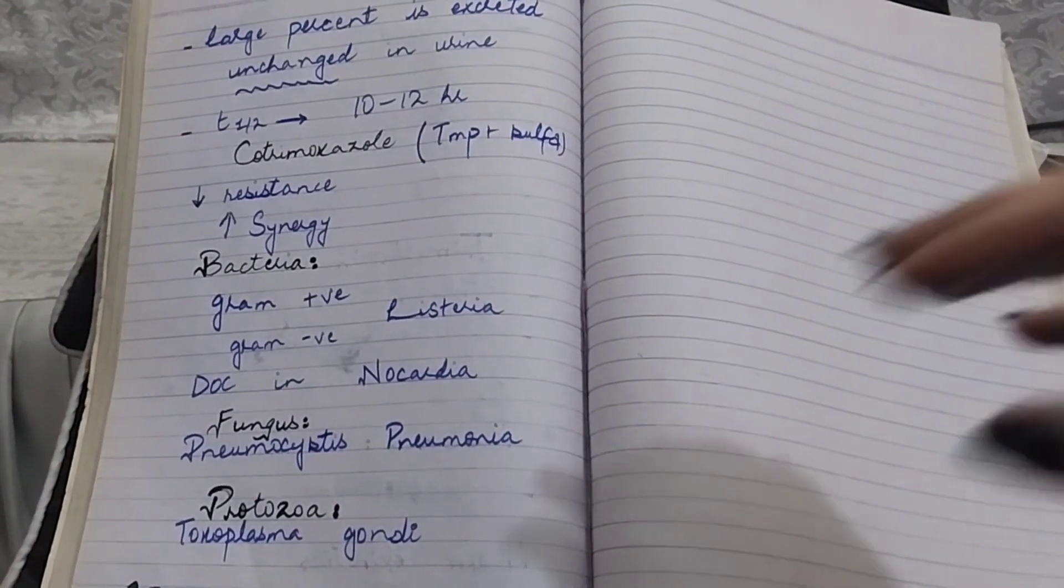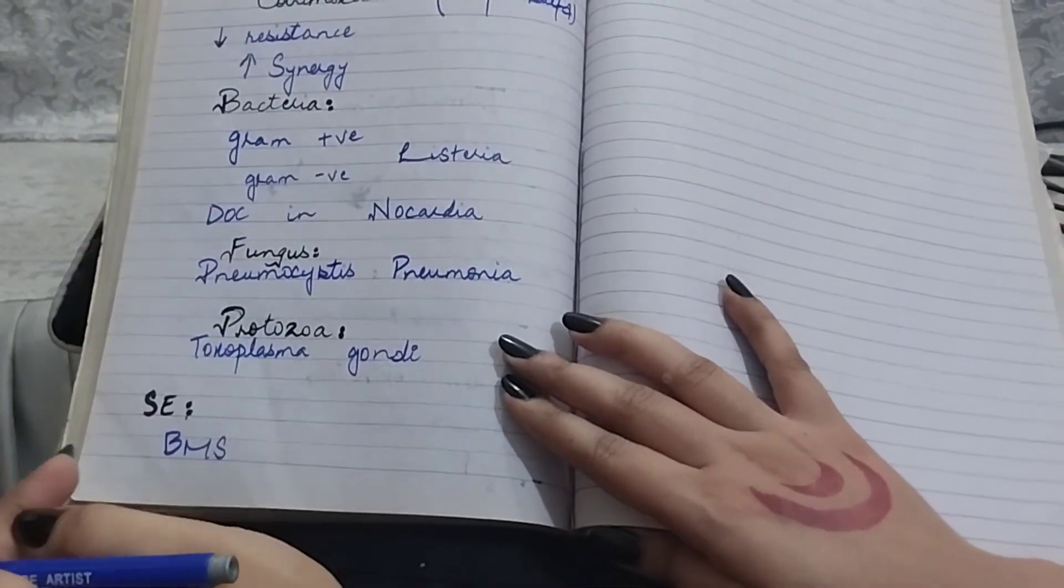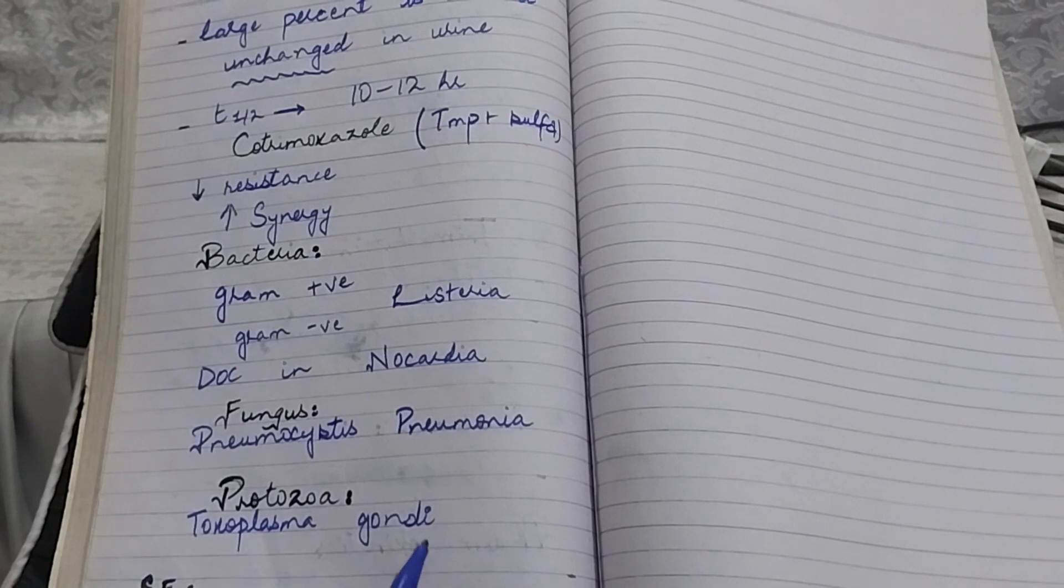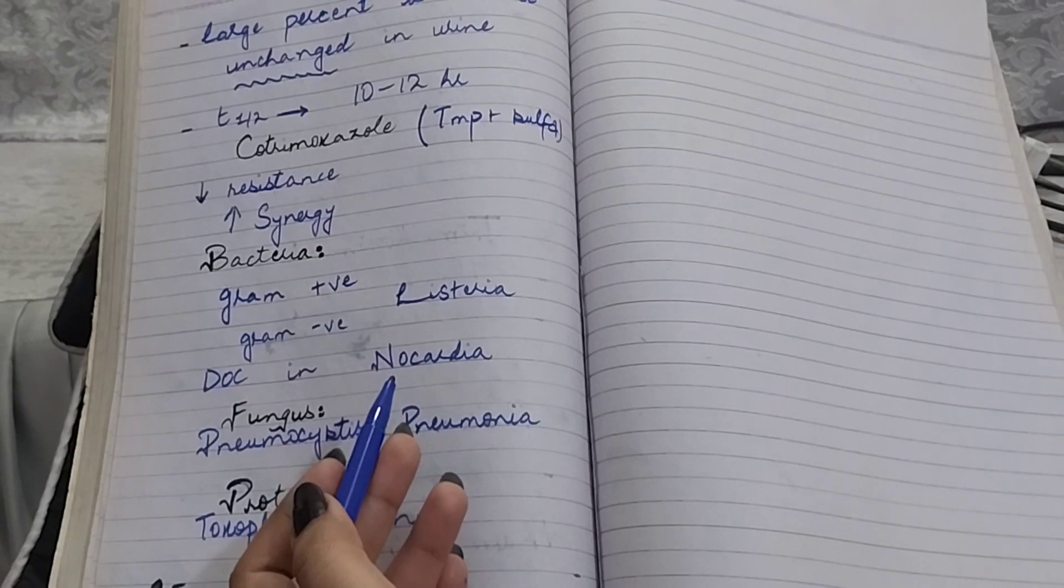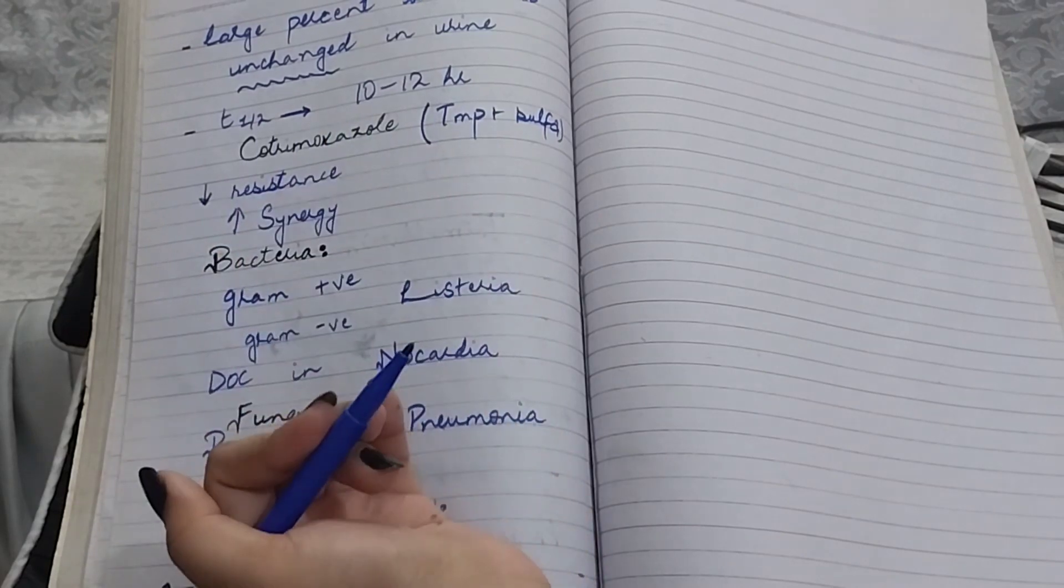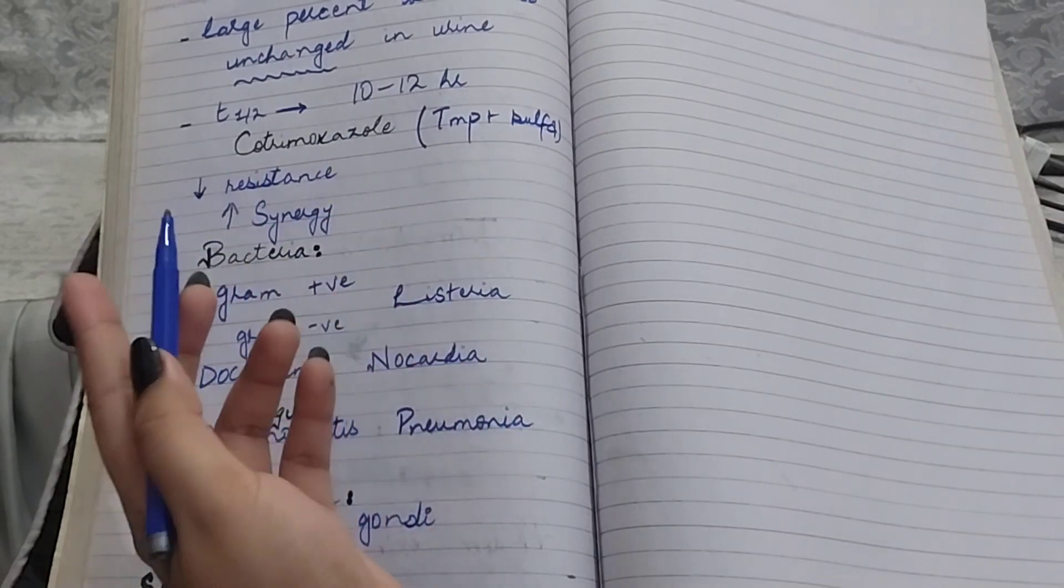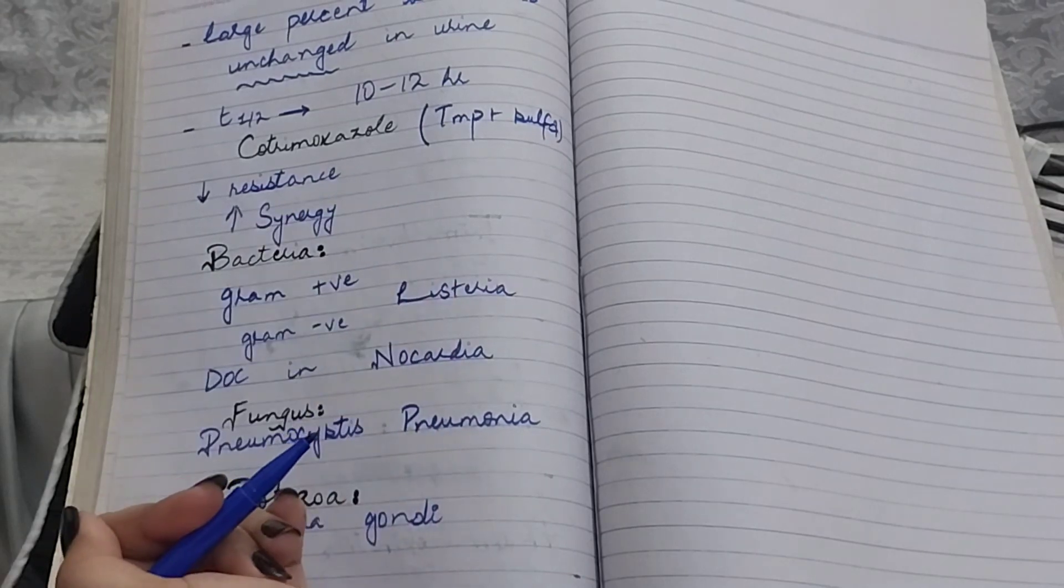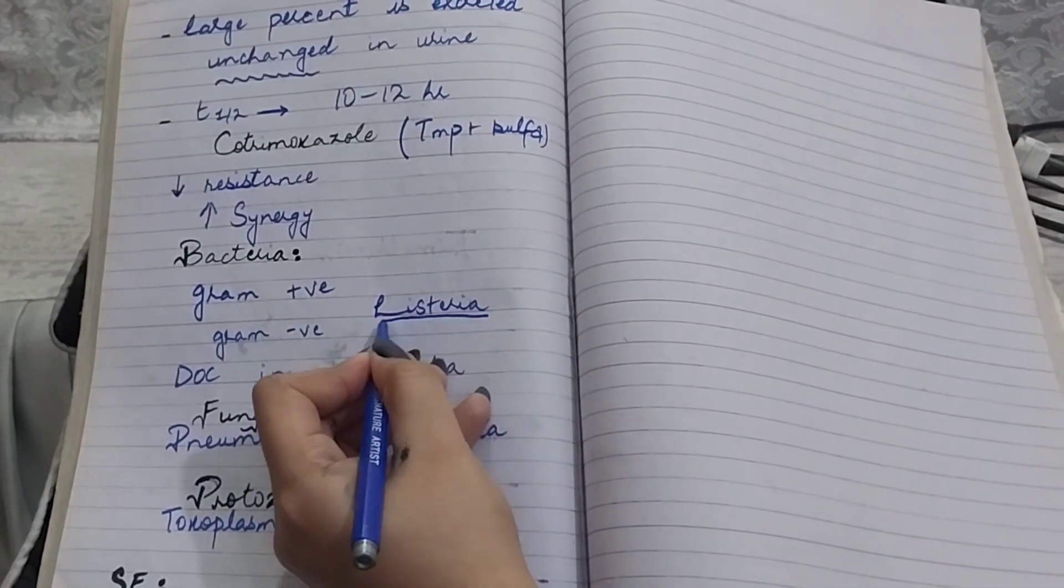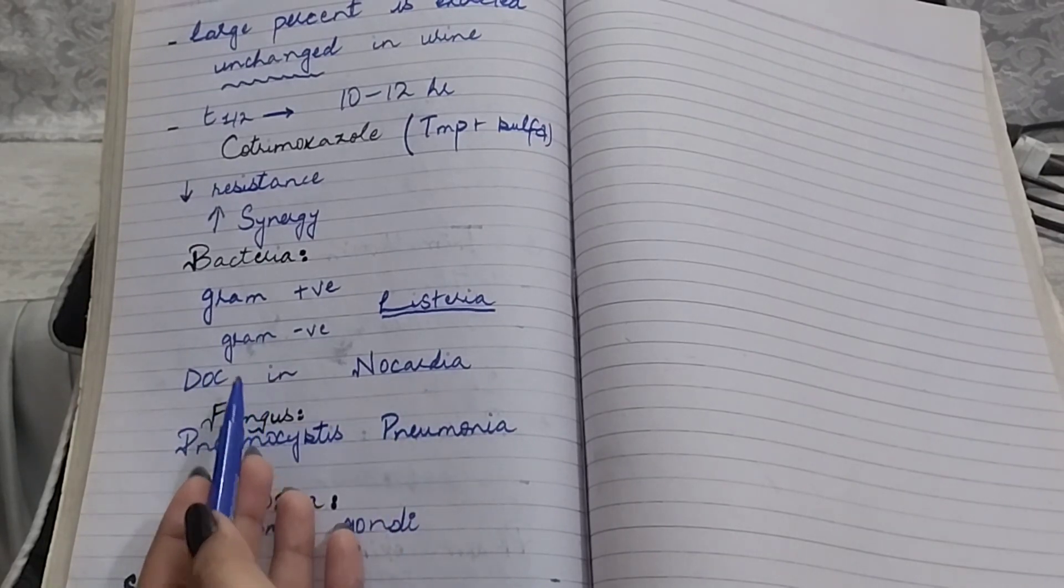They are active against different organisms: bacteria, fungus, and protozoa. In bacteria, cotrimoxazole is used to treat infections that are caused by gram-positive organisms like staph, including MRSA, and strep. They are active against gram-negative organisms like E. coli, Salmonella, Shigella, and H. influenzae. Cotrimoxazole is a backup drug for Listeria, and in case of Nocardia, the drug of choice is cotrimoxazole.